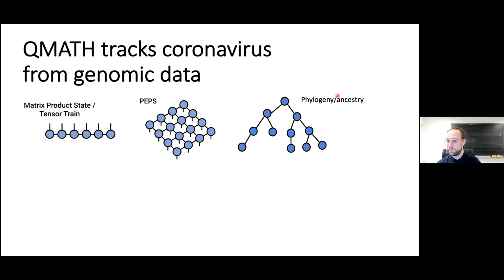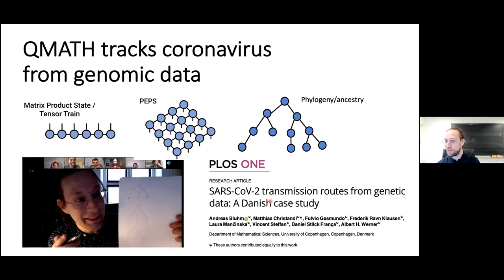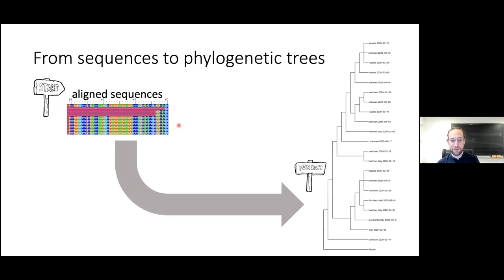If you put such a tensor network on a tree, you can study ancestry — these are the underlying models of phylogeny. When the pandemic started and there was a lot of virus genome available, we started looking into ancestry relations and published a paper on the Danish coronavirus genome. What we did was look at the sequences: the coronavirus has a 30,000 base-pair-long RNA string, and the first step is to align the sequences to pick out where the differences and mutations are.